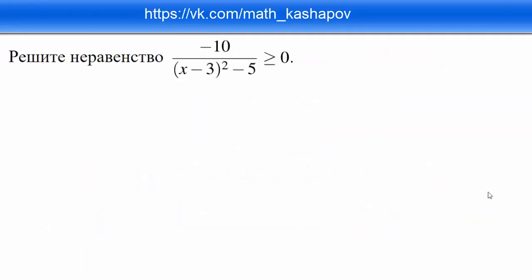Доброго времени суток! Сегодня у нас подготовка к ЕГЭ, 21 задание по математике. Решить неравенство: минус 10 делённая на (x минус 3) в квадрате минус 5 должно быть больше или равно нулю.